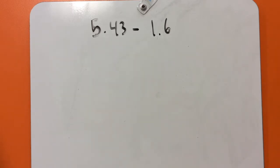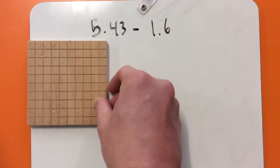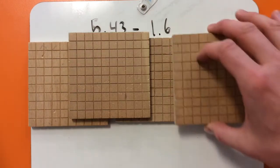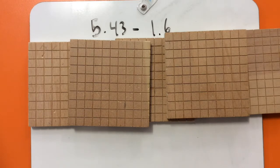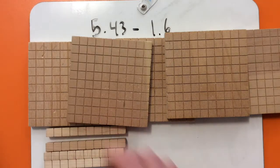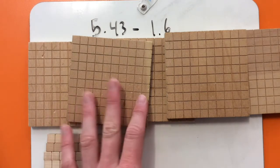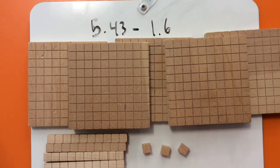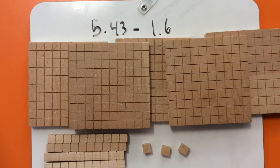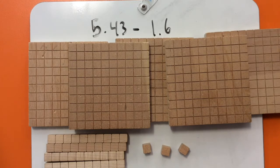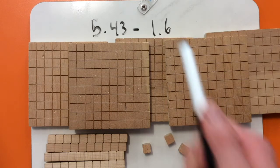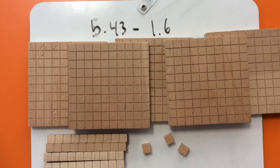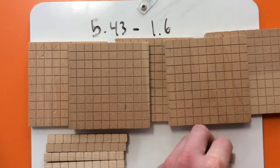I'm going to use these big blocks as my ones. So that's 1, 2, 3, 4, 5. And I've got 4 of these blocks as my tenths, and I've got 3 hundredths. So when I'm actually doing this, I start with 3 hundredths, and I'm not taking away any hundredths. So we're just going to put these off to the side and keep them there.